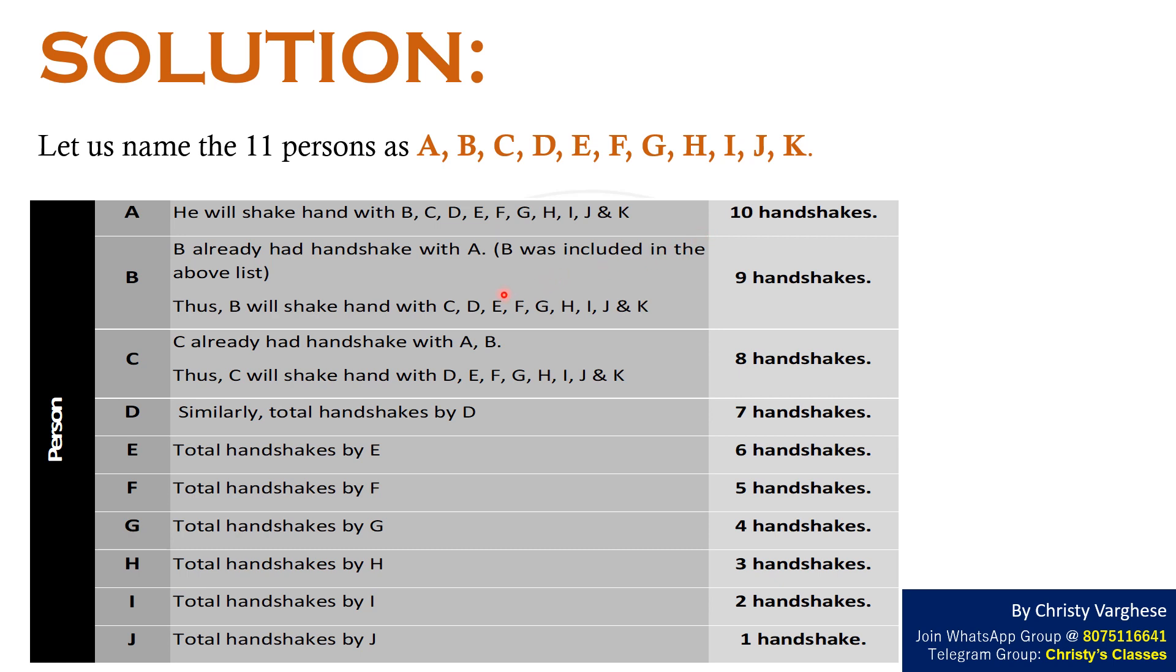Person B already shook hands with A. Thus, B will shake hand with C, D, E, F, G, H, I, J and K. That is 9 handshakes.